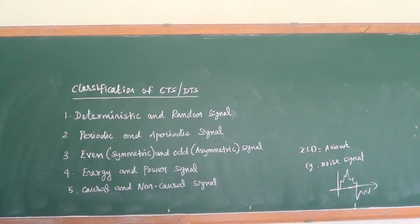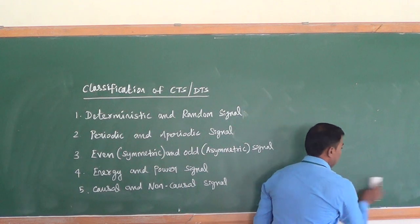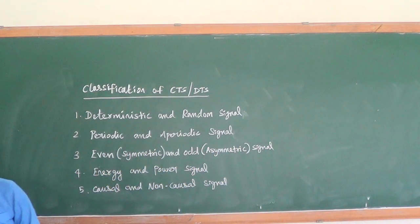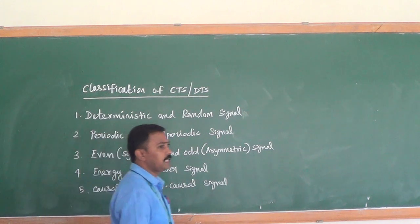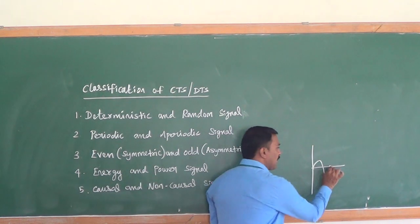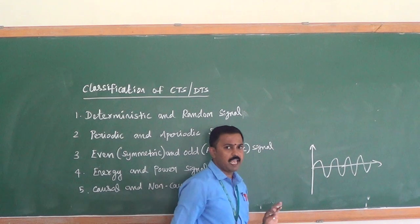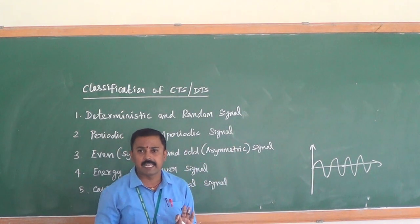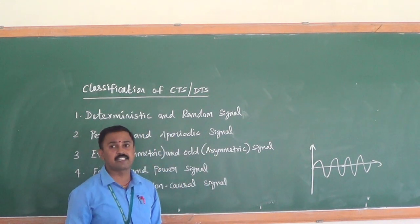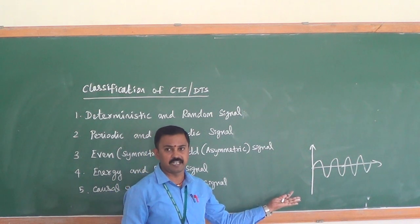Second, periodic and aperiodic signals. What does periodic mean? A periodic signal repeats at regular intervals. For example, one cycle of a sine waveform that repeats again and again is a periodic signal. An aperiodic signal does not repeat at regular intervals — that is called an aperiodic signal.